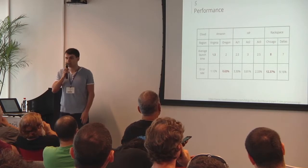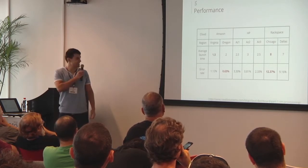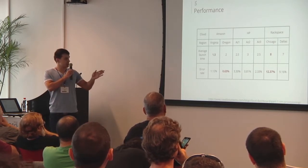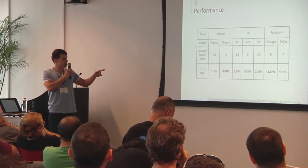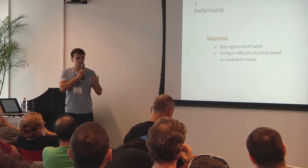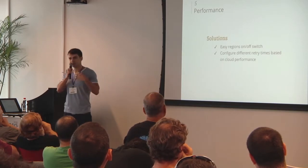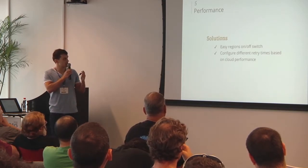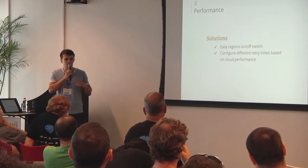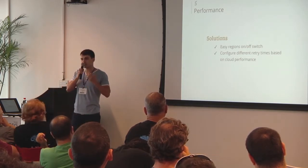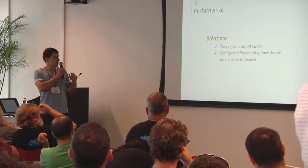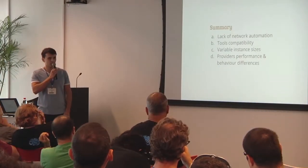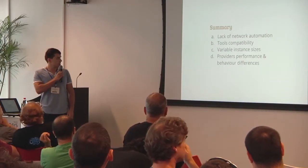Additionally, the performance between the providers varies significantly. As you can see in that graph from the Ravello blog — thank you guys — we did discover the same thing ourselves. Pay attention to the difference in average time and the API error rates. We needed to overcome that, so we added on/off switches to easily switch regions of providers we saw as unreliable, and we fine-tuned our retry mechanisms to better work with the different providers.